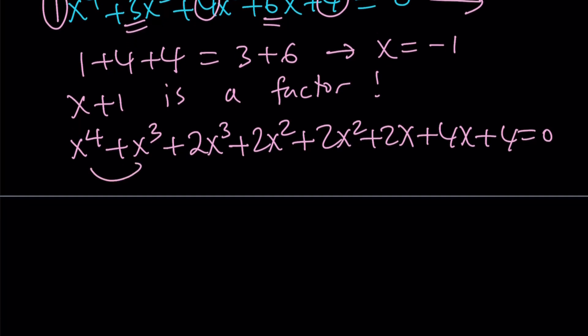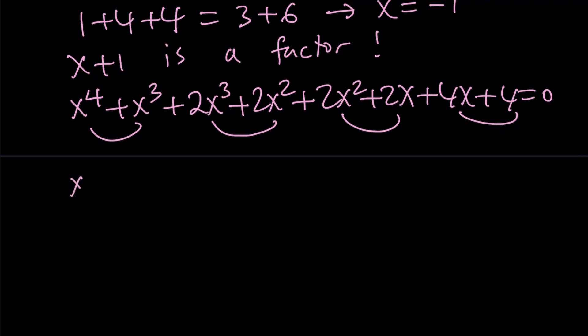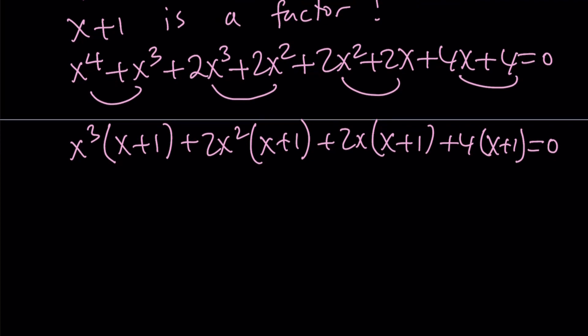Now, we can go ahead and factor this by grouping, and we should be getting something like this. x cubed times x plus 1 plus 2x squared times x plus 1, and then 2x times x plus 1, and 4 times x plus 1, which confirms the fact that x plus 1 is a factor. Now, we can go ahead and take out x plus 1, and then we're going to end up with a cubic.